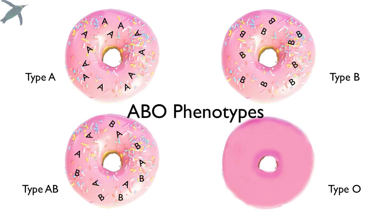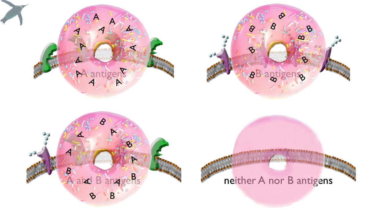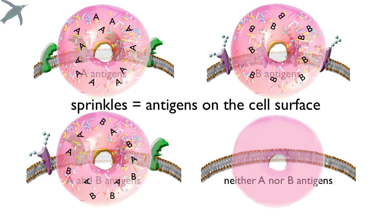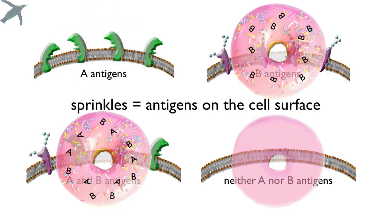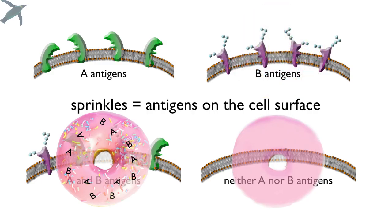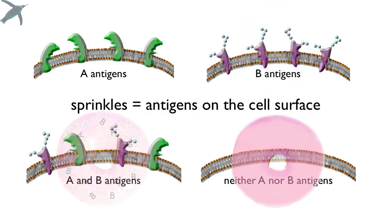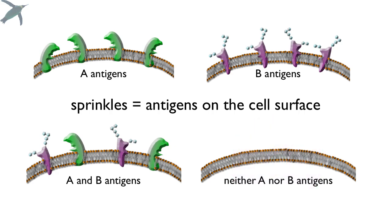These are the ABO phenotypes — the traits that individuals can express. What this analogy means is that the donuts are the blood cells and the sprinkles are antigens: antigens on the cell surface. We designate the different antigens as either A or B. So the A people have A antigens on the surface of their cells, the B people have B antigens on the surface of their cells, the AB people have both, and the plain donuts have neither A nor B.